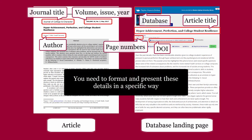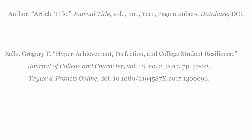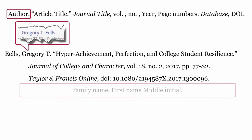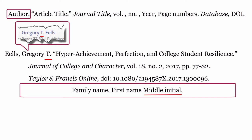You need to format and present these details in a specific way. Author: this is formatted using the family name, comma, first name, middle initial if any, and then a full stop.